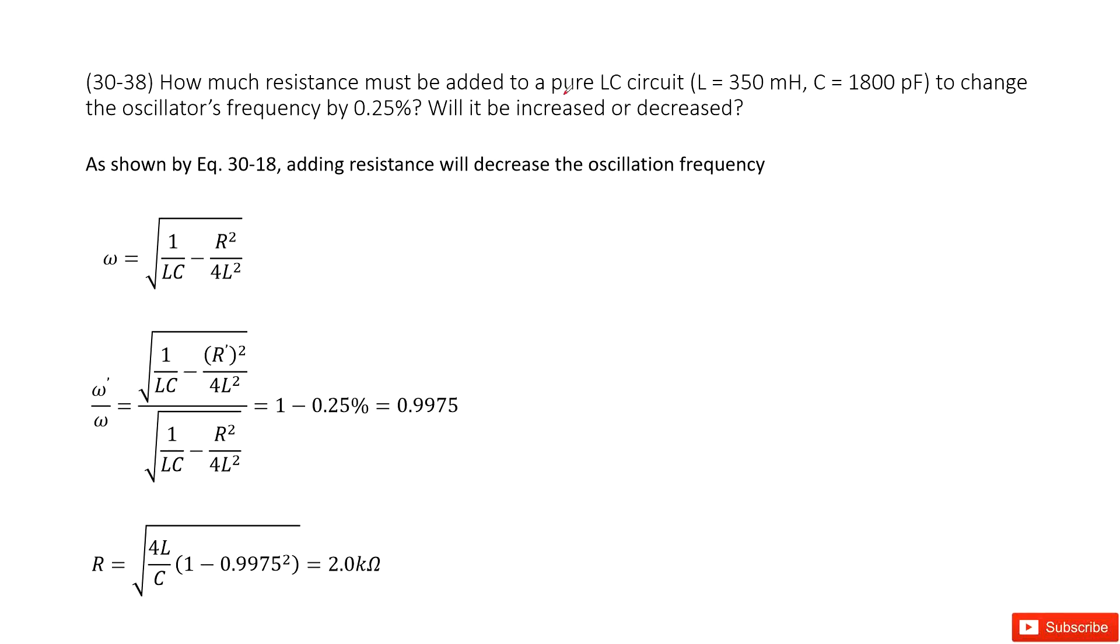So we have a pure LC circuit, and L and C are given as two quantities. The problem tells you how much resistance must be added to change the oscillator's frequency by 0.25%.